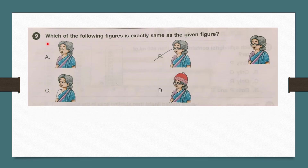Question number 9: Which of the following figures is exactly the same as the given figure? The given figure is this one. In some options, glasses are not there; in another, there is an extra cap. This figure is exactly matching with the given figure. So our answer is option B.